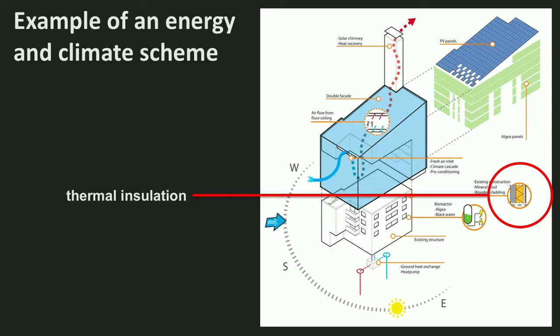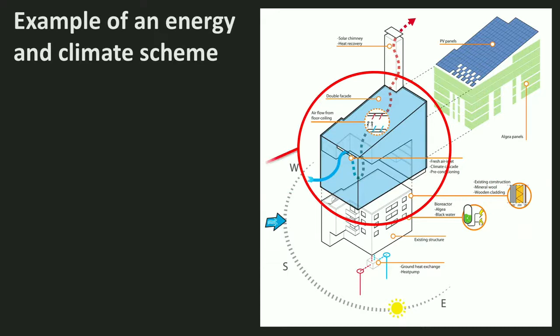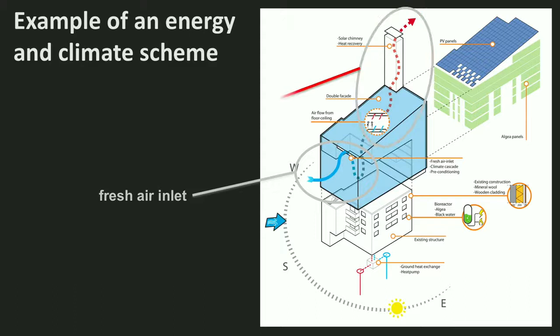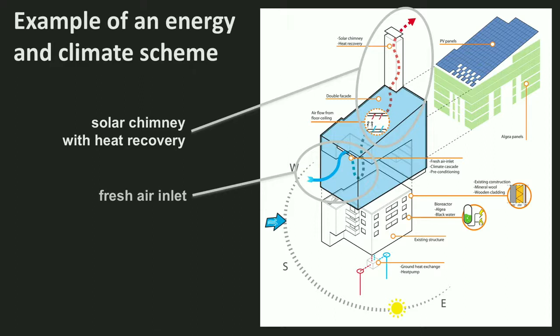He also added a double facade — a layer of glass over the existing building. Fresh air is let in through this double skin, passes through the building floor to ceiling, and leaves the building through a solar chimney. At the top of the chimney, heat is recovered from the air — you can only do that at the top, because otherwise the thermal draft will not work. The heat extracted is then stored in an aquifer thermal energy storage underground, and in wintertime this heat will be used to heat the building.